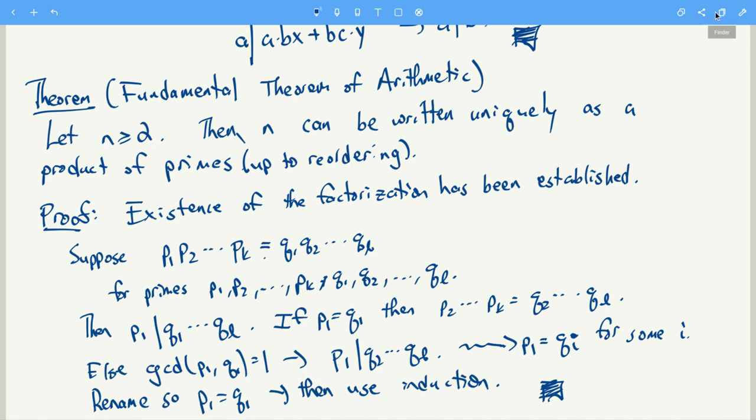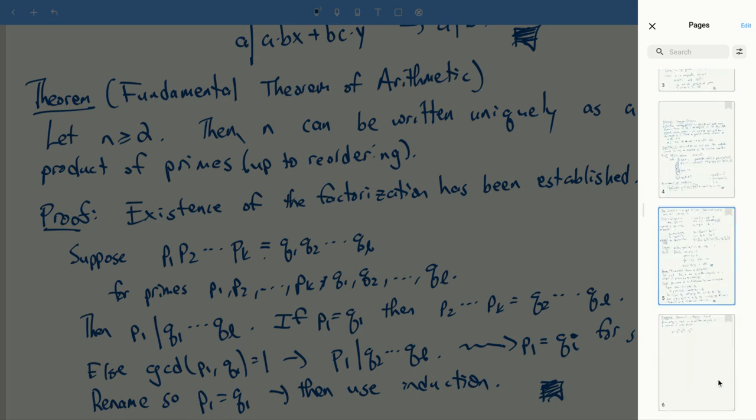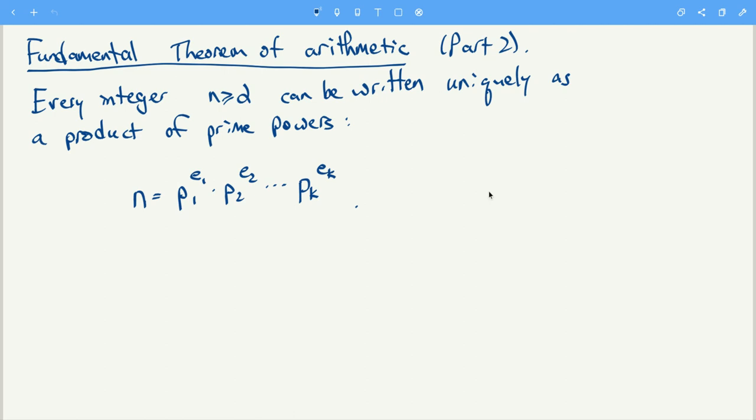Okay, and I also wanted to show you another way that the fundamental theorem of arithmetic is sometimes written. Sometimes it's more useful to write it instead of just a product of primes, we can say that every integer greater than or equal to 2 can be written uniquely as a product of prime powers, p1 to the e1, p2 to the e2, up to pk to the ek, where p1, p2, up to pk are distinct primes, and e1, e2, up to ek are all greater than or equal to 1.